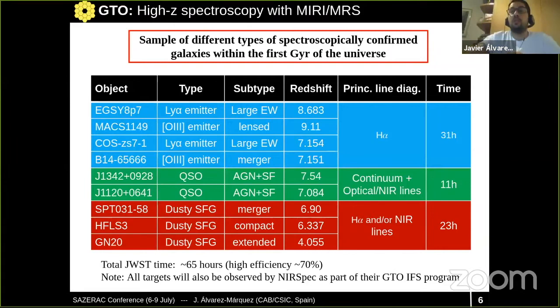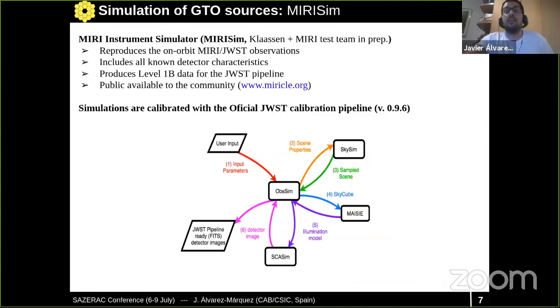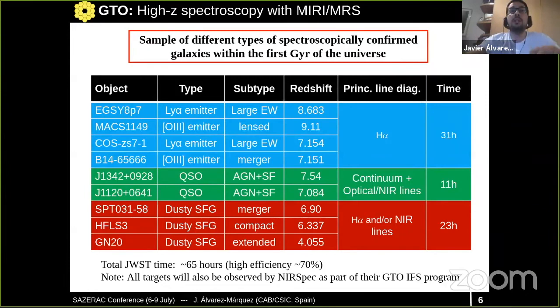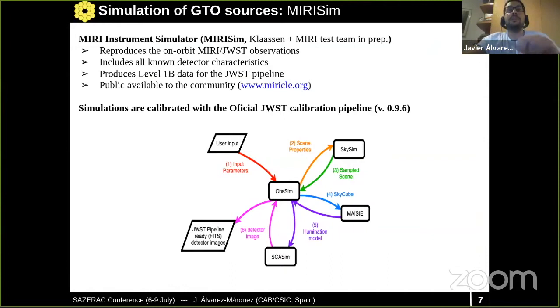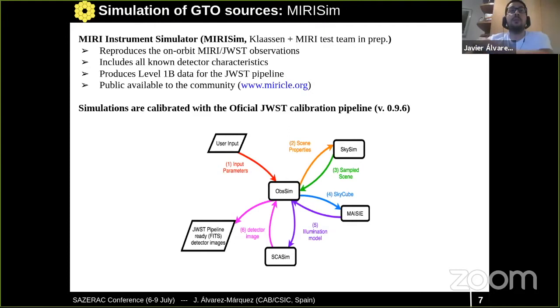The total time of this program is 65 hours, and all the sources will also be observed by the NIRSpec GTO program, meaning we will have access to additional emission lines. I will now take B14 and one quasar to perform some simulations to show how these will be seen by MIRI. I use the MIRI instrument simulator called MIRISim, made by the MIRI test team, which reproduces on-orbit MIRI/JWST observations and includes realistic detector characteristics. This tool is public and can be used by the community, and the simulations must be calibrated using the official JWST calibration pipeline.